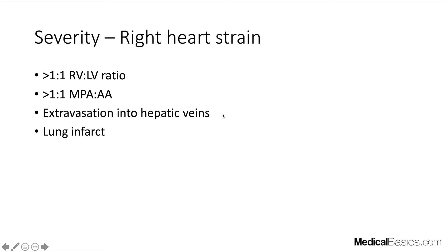When we talk about right heart strain, it's typically diagnosed on echo or CT. It relates to strain put on the right side of the heart. Normally the left ventricle should always be bigger than the right ventricle because the LV has to pump blood to the rest of the body. When the RV is bigger than the LV, you may suspect right heart strain. Another sign is the interventricular septum bowing toward the left ventricle instead of its normal rightward orientation.